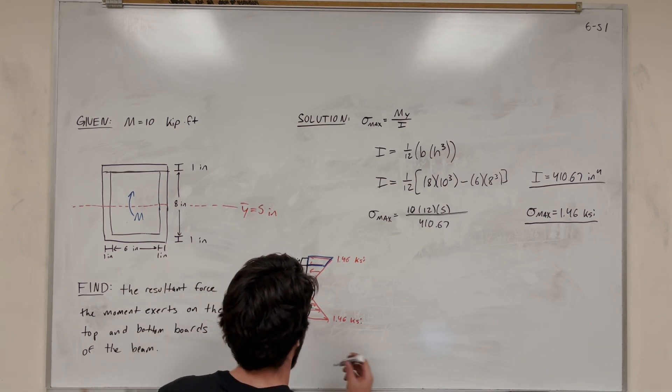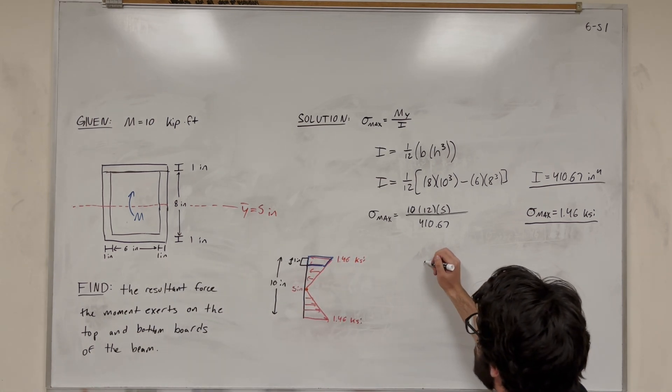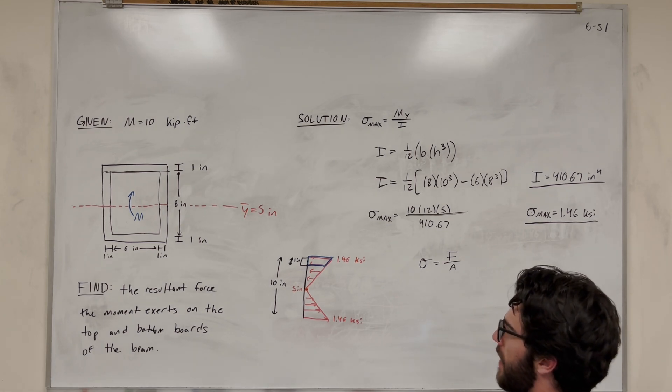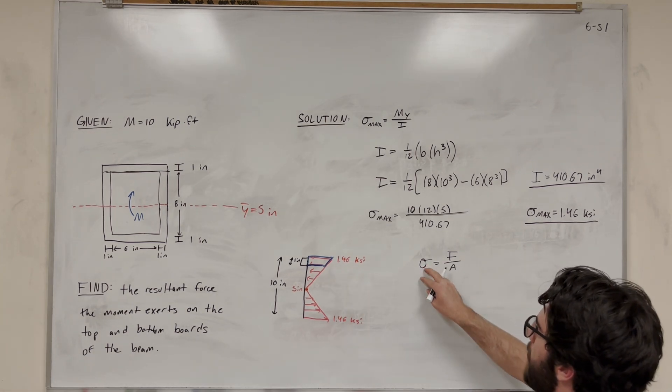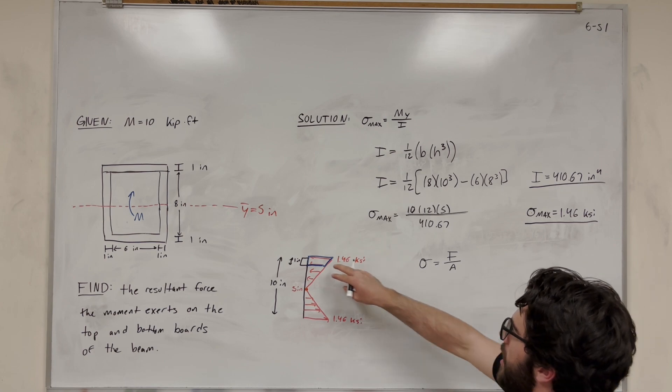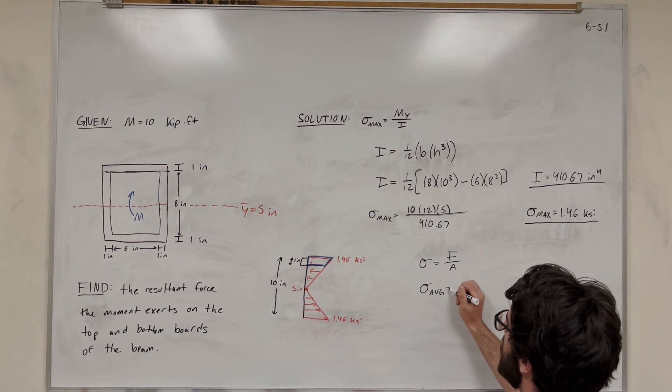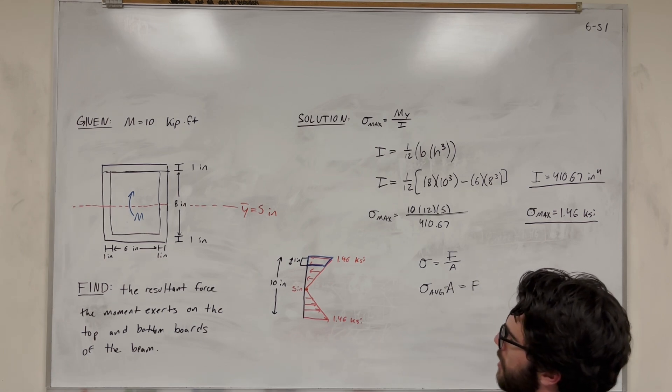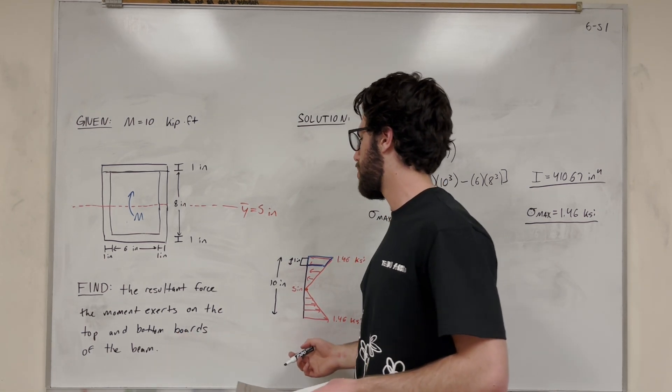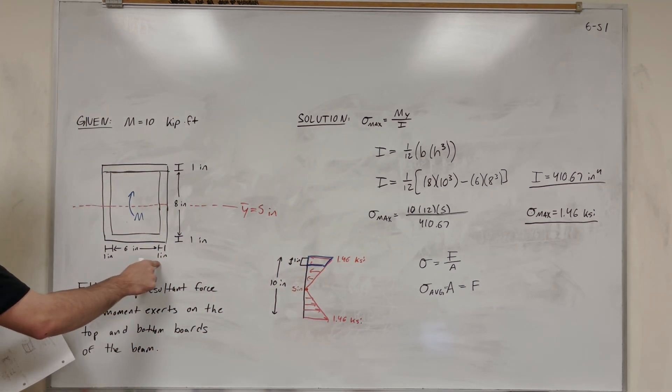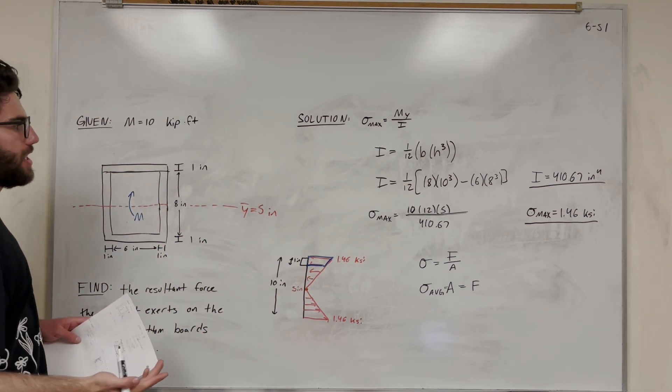If we're trying to find force, what equation can we use? We know that stress equals force divided by area. So what we need to do is find the area of this section and multiply it by the average bending stress in the shape. Average bending stress times area equals the force. We're looking at just the top and the bottom boards. The area is 8 inches wide and an inch tall, so the area is 8 inches.